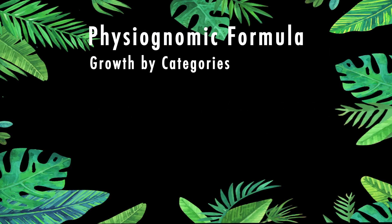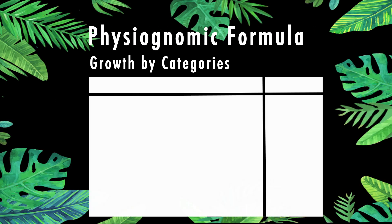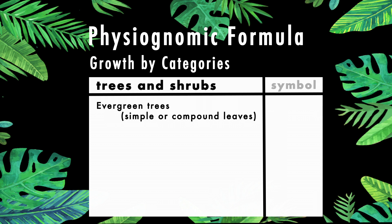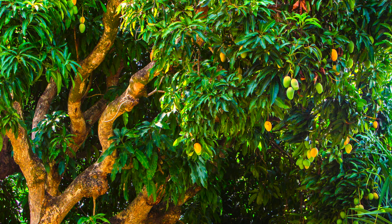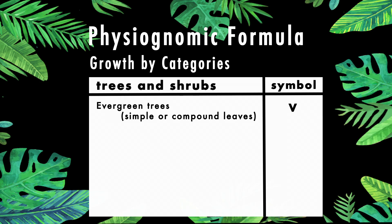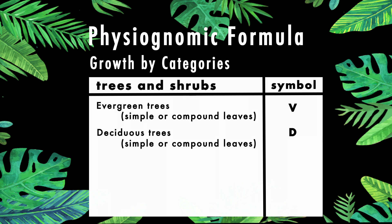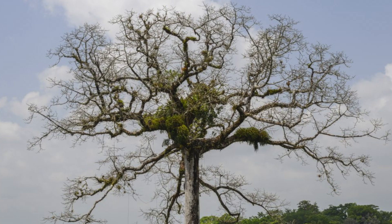To determine the growth form, we use the table of the physiognomic formula where we find basic forms of growth — trees and shrubs. For evergreen trees with simple or compound leaves, we use the symbol V. An example is the mango. For deciduous trees, which are those that lose their leaves at certain times of the year, the symbol D is used. An example is the Saba or Kapok tree.